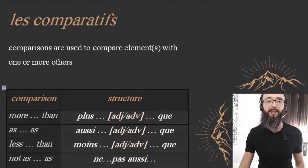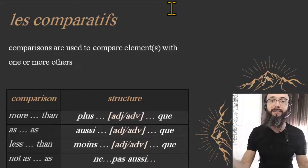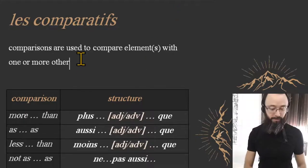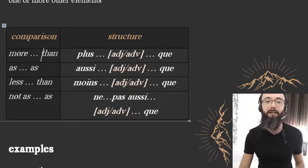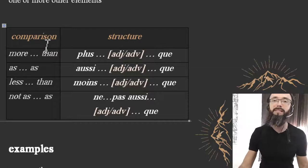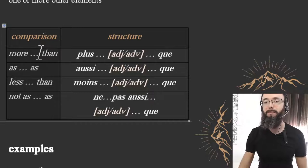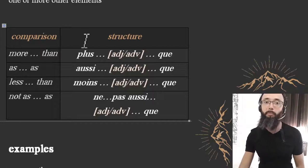We're going to cover comparatives in French. Comparisons are used to compare elements with one or more other elements. You can see a table on screen here. For 'more than' in French, we say 'plus grand que' — let's take 'big' as the adjective. 'More big than' is 'plus grand que.' This is actually easier in French than in English, where you have 'bigger, better, stronger,' which can be a headache. In French, it's mostly 'plus' + adjective + 'que.'